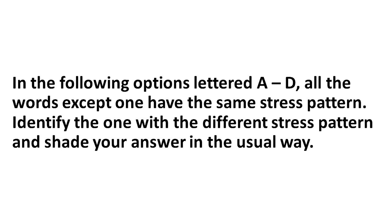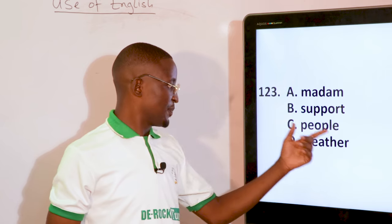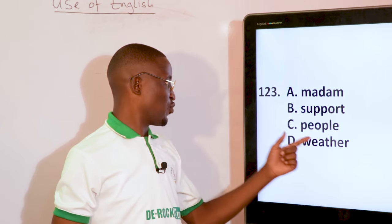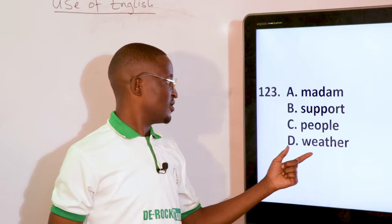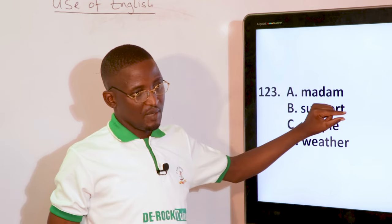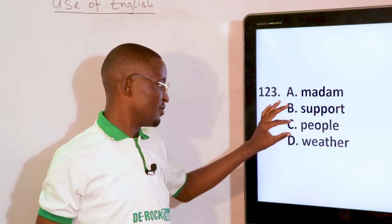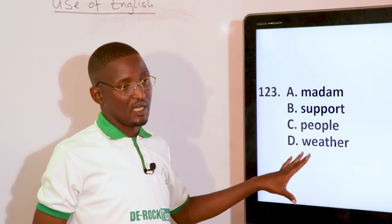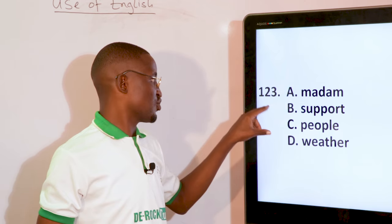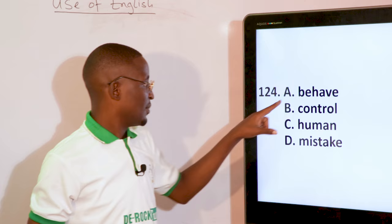We have: madam, support, people, weather. Support has second syllabic stress, while madam, people, and weather have first syllabic stress. So support is the one not having the same stress pattern as the others.